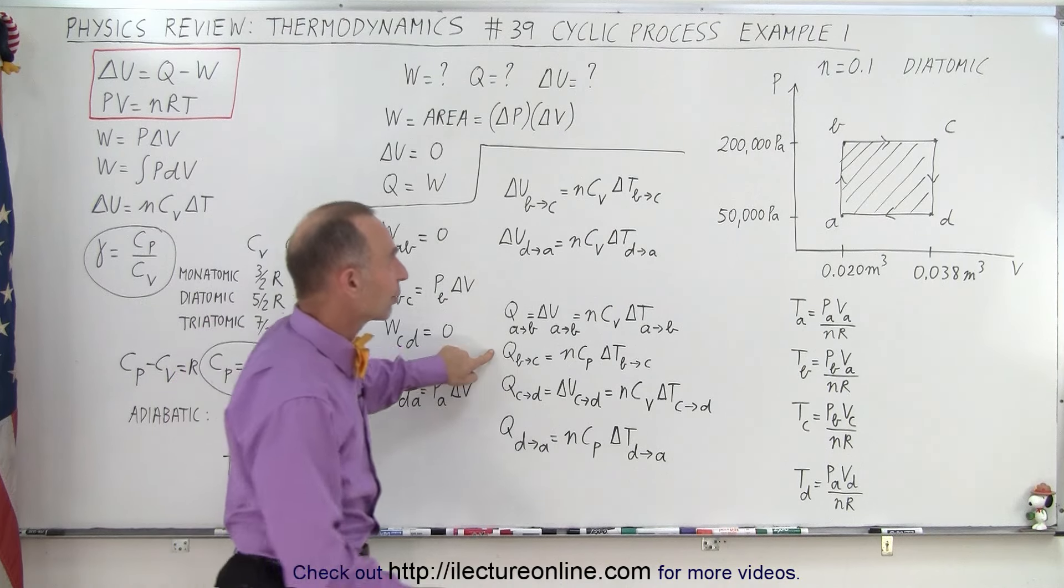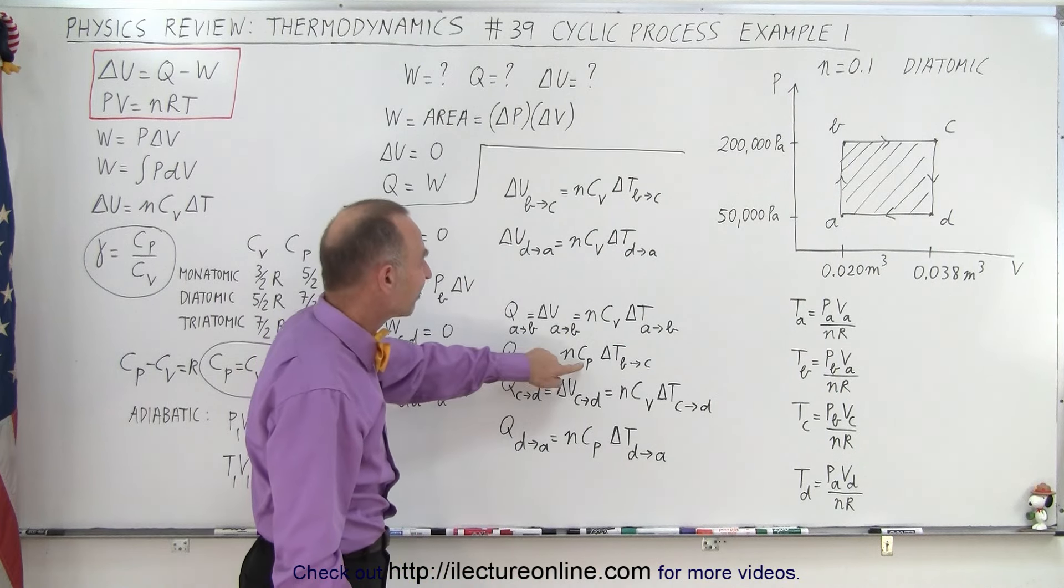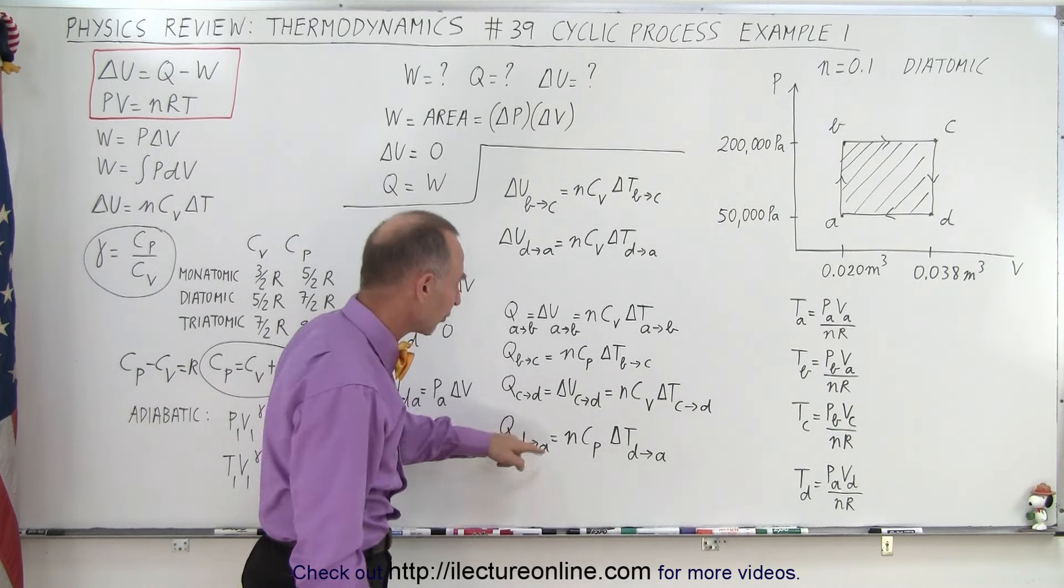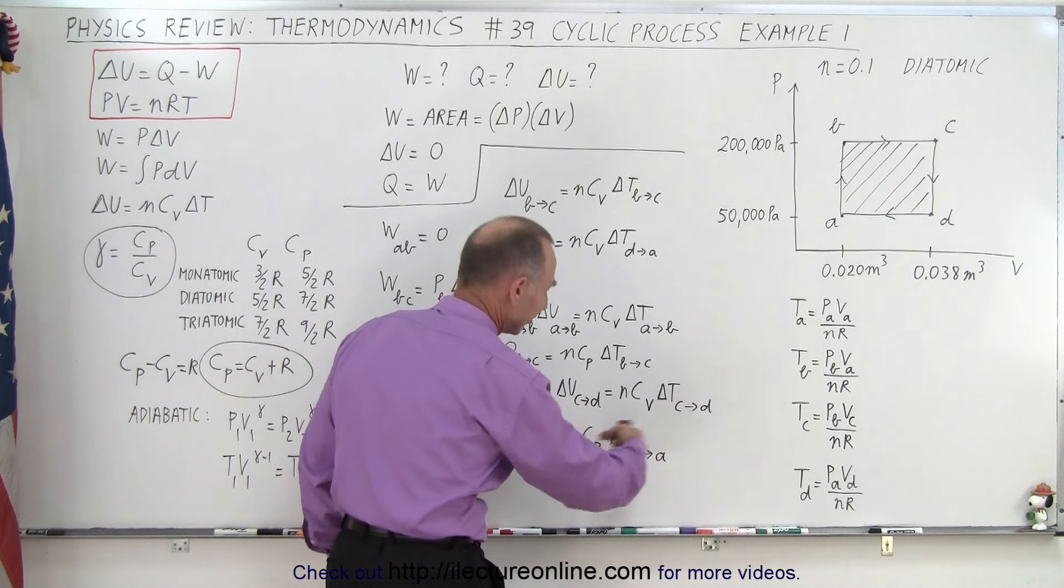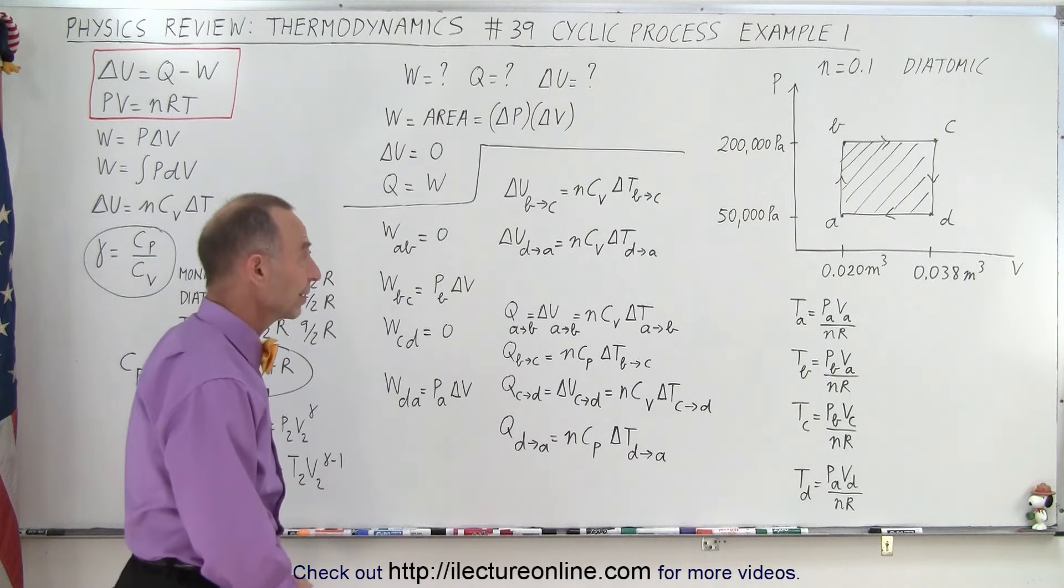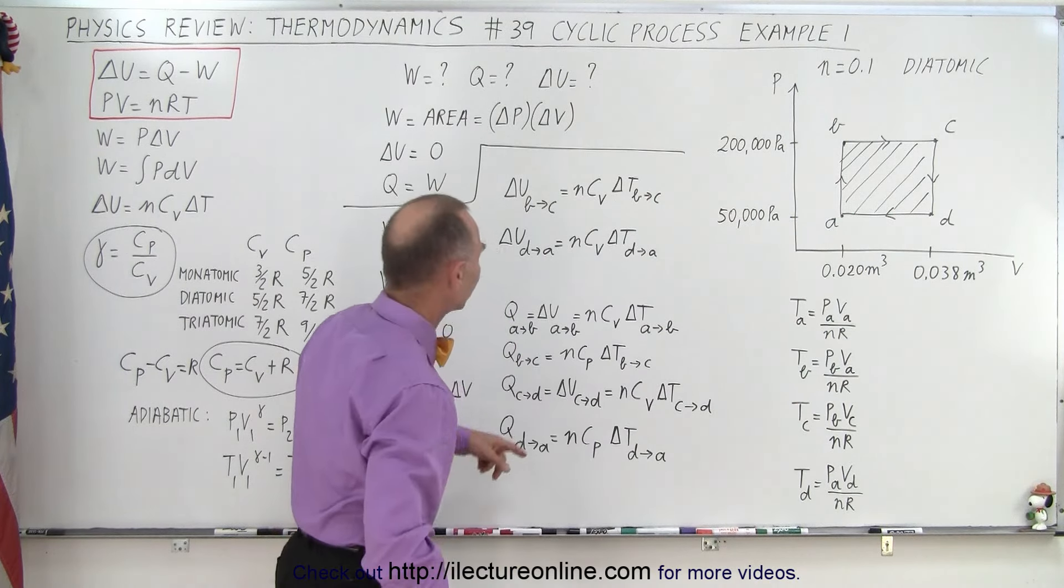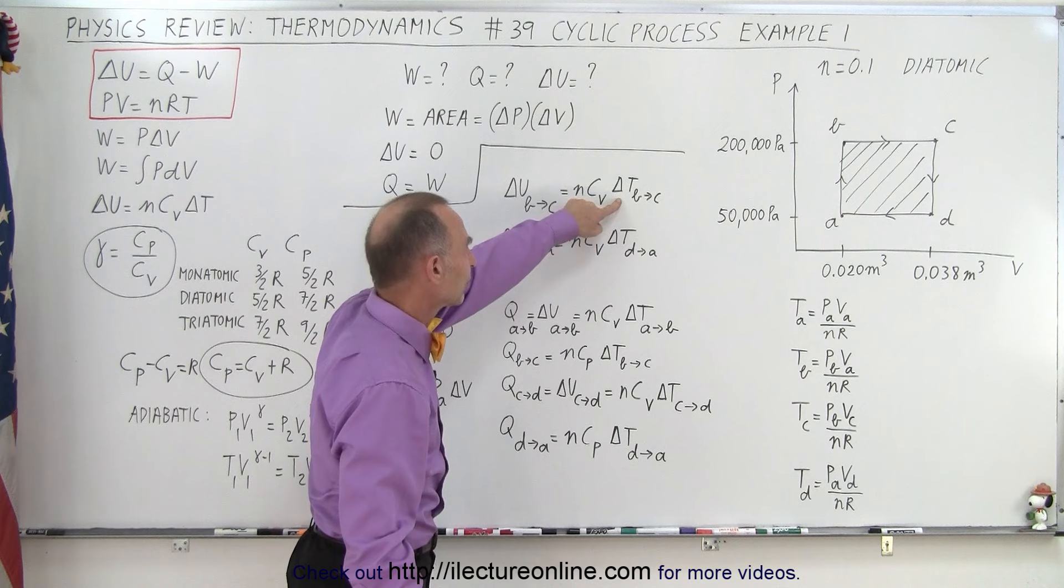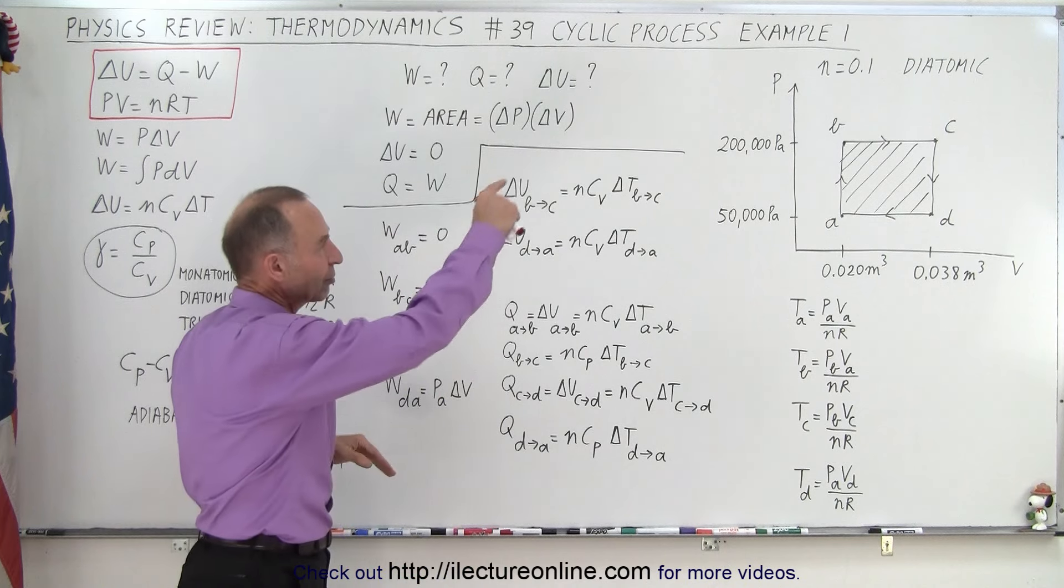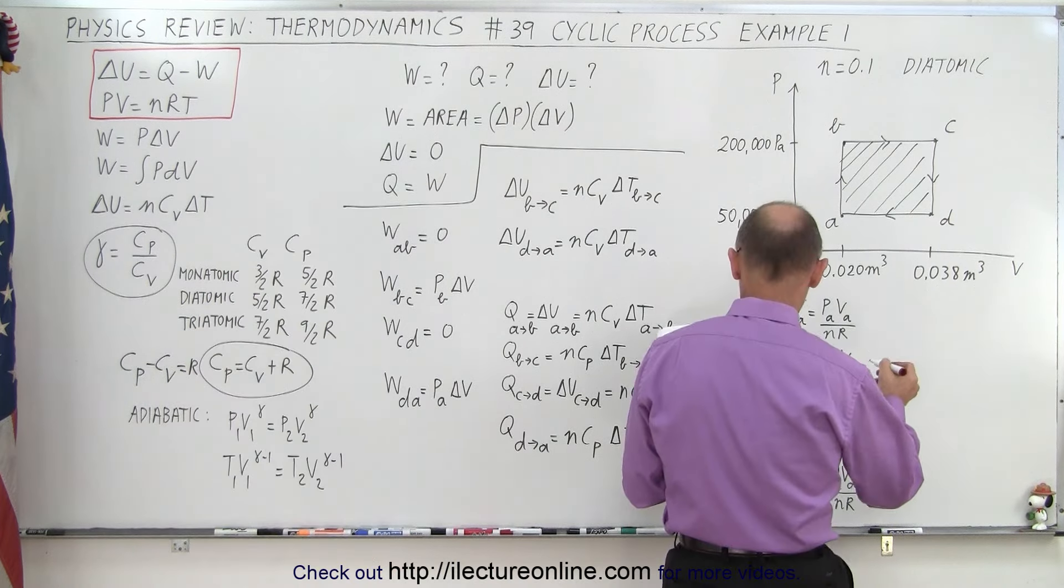But if the pressure stays constant, like going from B to C and D to A, then notice that the Q from B to C is N C sub P delta T, and the Q from D to A is N C sub P delta T. This will be a negative Q, of course, since the change in temperature will be negative, and of course all the changes in temperature will be provided by knowing these four values right here. For the delta U going from B to C and D back to A, notice instead of C sub P we have to use C sub V for the same change in delta T. So this is how we're going to calculate the delta U, the Q, and the work done in each of the four cycles, but when you add them all up, they should add up to the same values that you got from doing this.